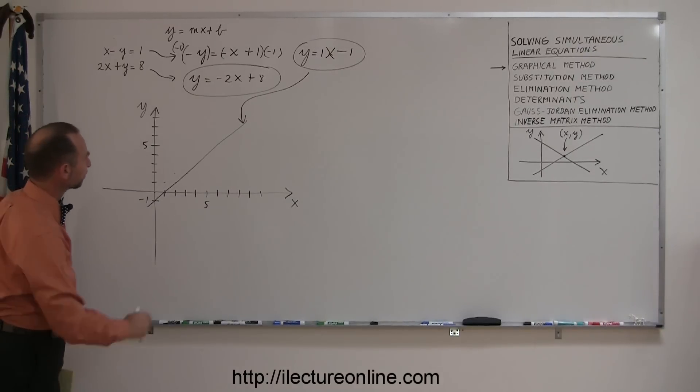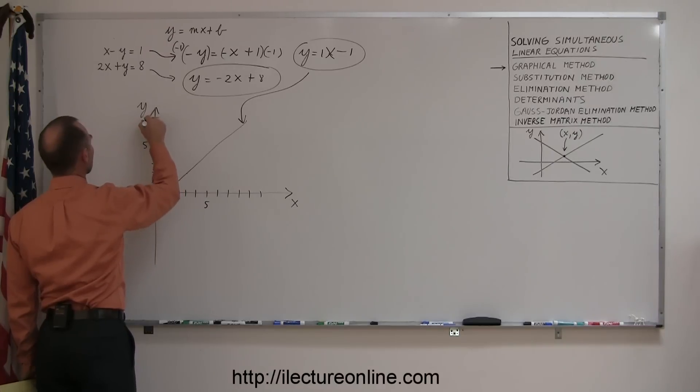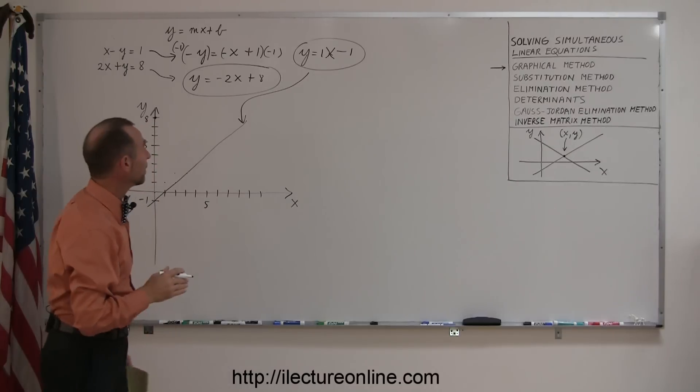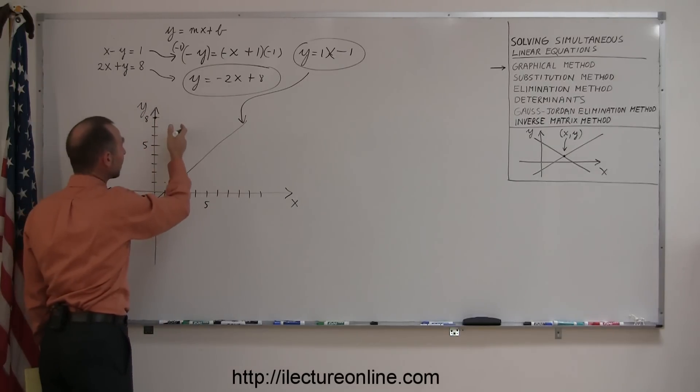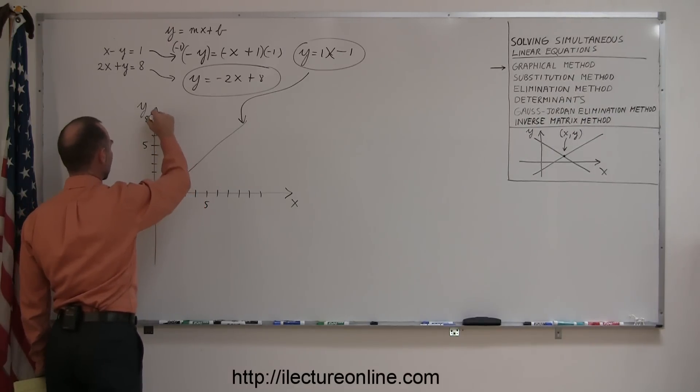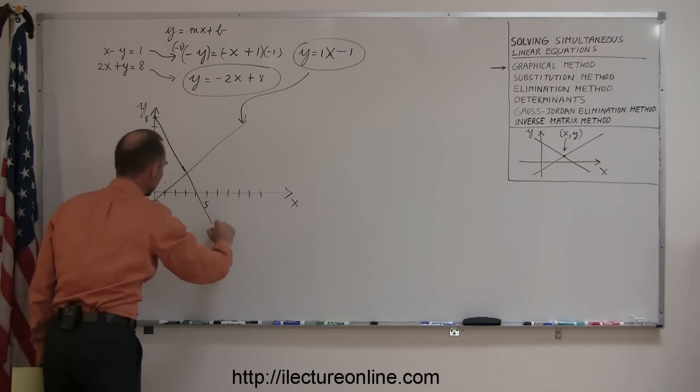Now I do my second line. Here's my intercept plus 8. So plus 8 is over here. So I know that this line crosses the y-axis at this point. And my slope is negative 2. That means it drops 2 for every 1 that I go across. If I connect these points together, it looks like that.